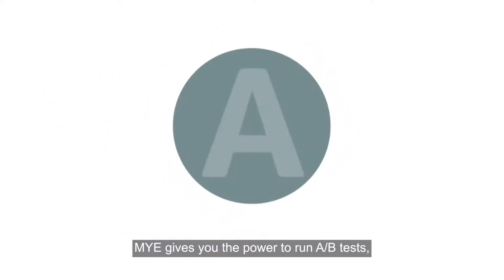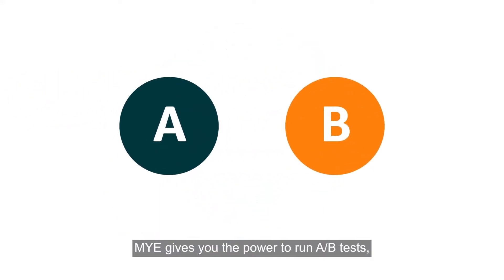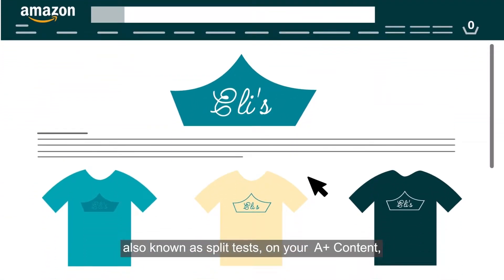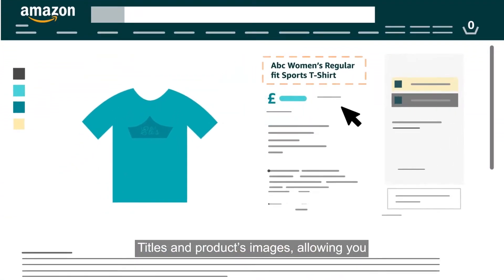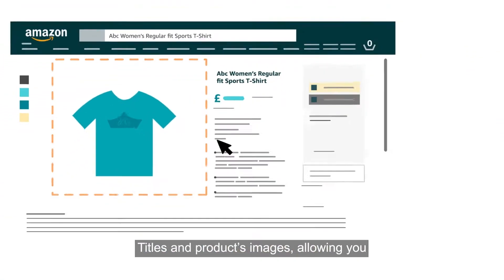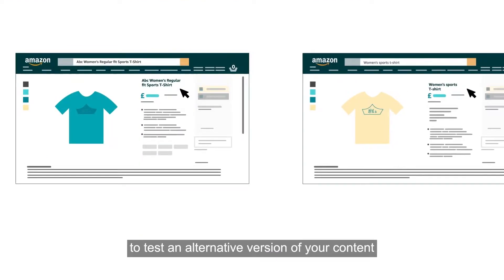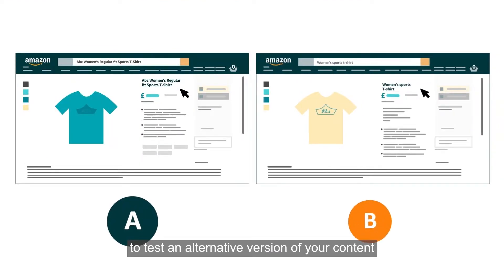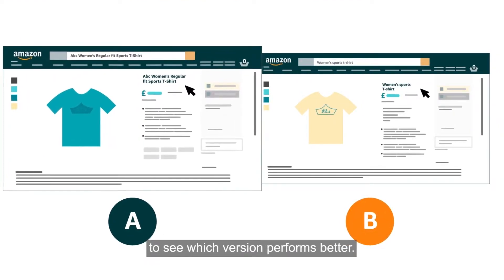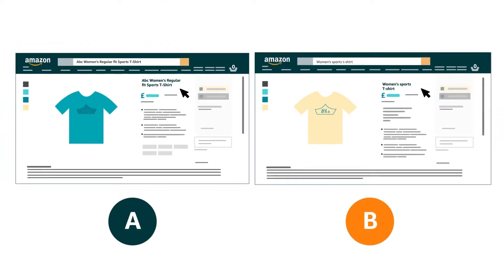MYE gives you the power to run A/B tests, also known as split tests, on your A-plus content, titles, and product images, allowing you to test an alternative version of your content to see which version performs better.